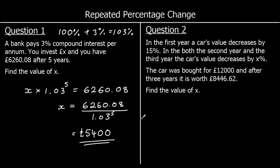Question 2 says in the first year a car's value decreases by 15%. In both the second year and the third year it decreases by X%. We don't know what the percentage is, but we know it was bought — initially worth £12,000 — and after three years it's worth £8,446.62. So we start with £12,000. In the first year it loses 15%, so 100% take away 15% is 85%, which as a decimal is 0.85.